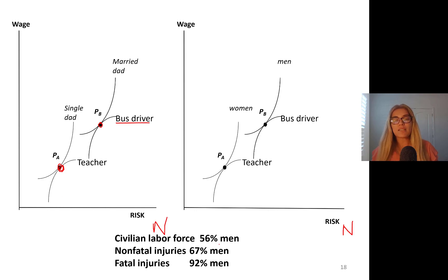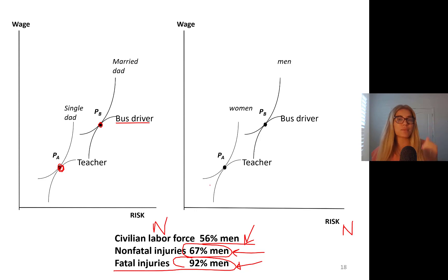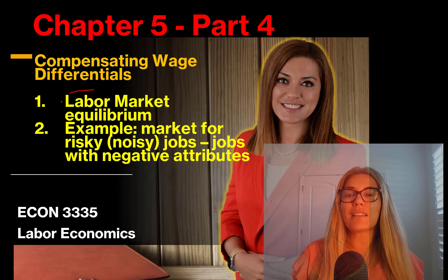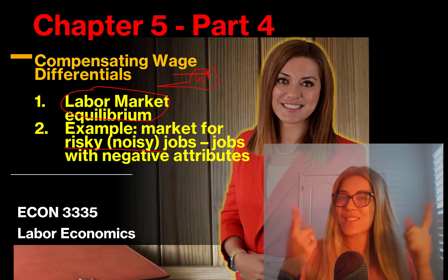The civilian labor force is 56% men, yet non-fatal injuries are disproportionately 67% men. Even more striking, fatal injuries happen to men 92% of the time — very disproportionate. This is because they sort into different jobs. In the next part, we'll talk about labor market equilibrium, compensating differential W-star optimal wage determination, and the market for risky jobs with negative attributes. See you in part 4.